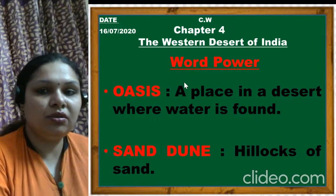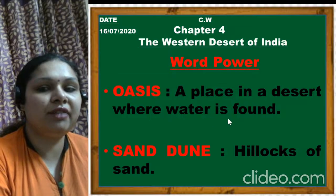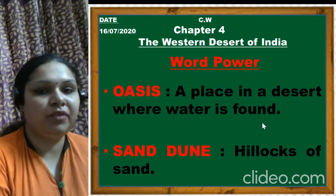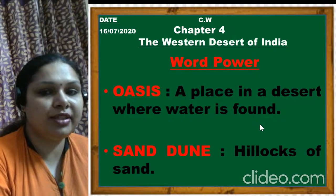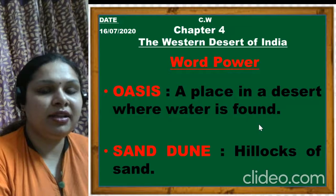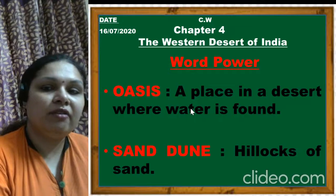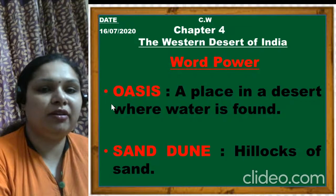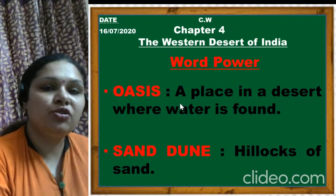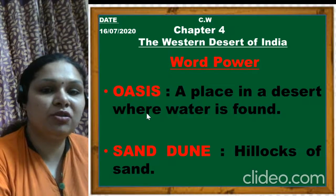The first Word Power is oasis. Oasis is a place in the desert where water is found. The fertile land in the desert where water is available is known as an oasis. You can see greenery there - some plants are grown and people also live nearby the oasis.